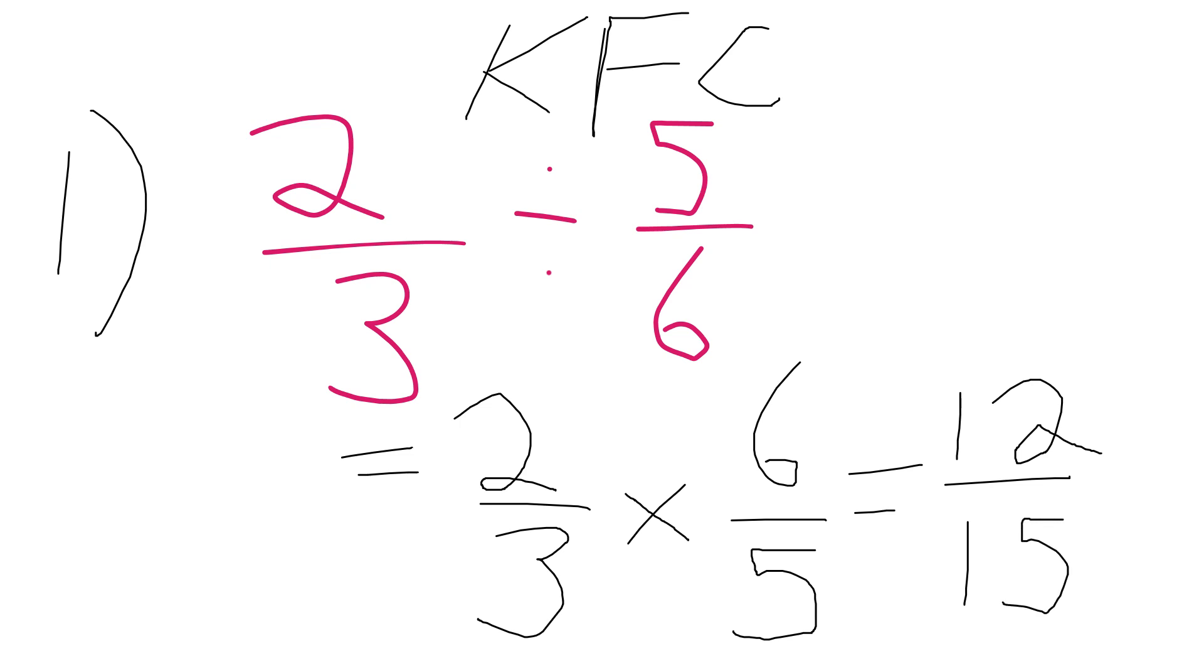I can simplify this fraction by three. Twelve divided by three is four, and fifteen divided by three is five. So our final simplified answer is four-fifths. Two-thirds divided by five-sixths is indeed four-fifths.